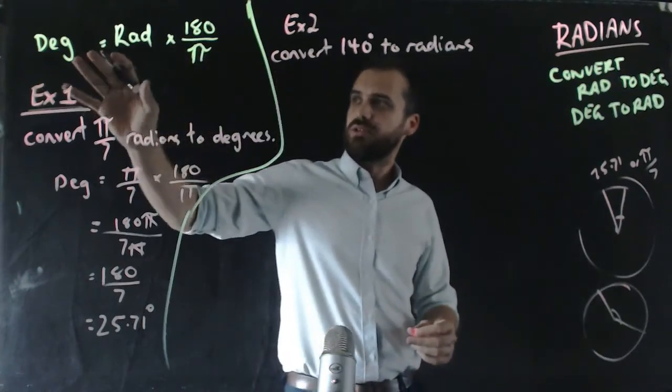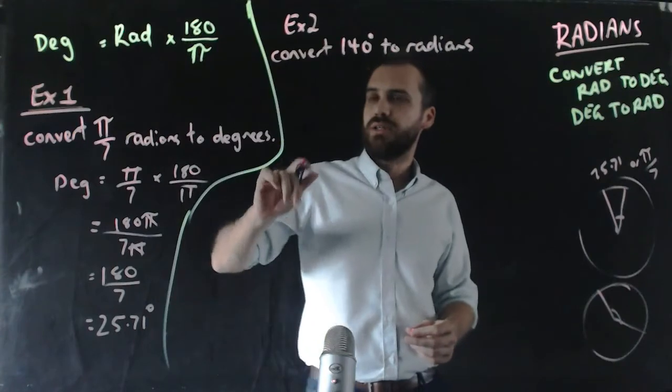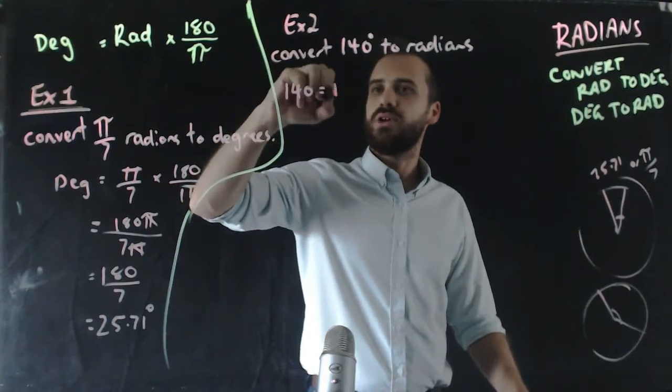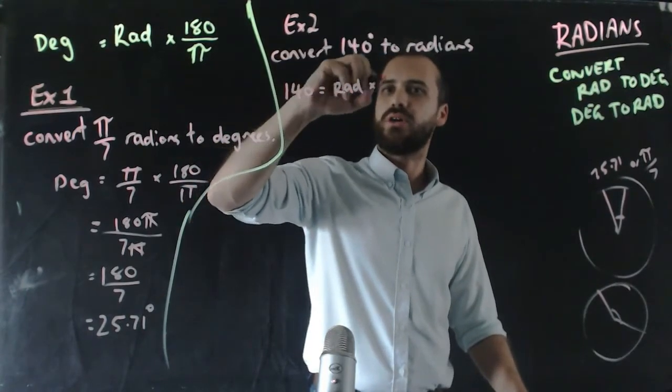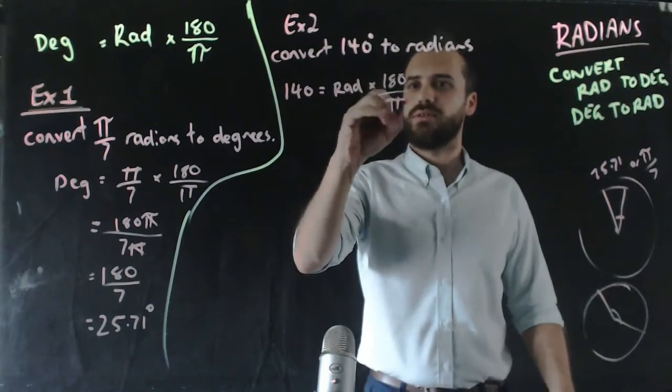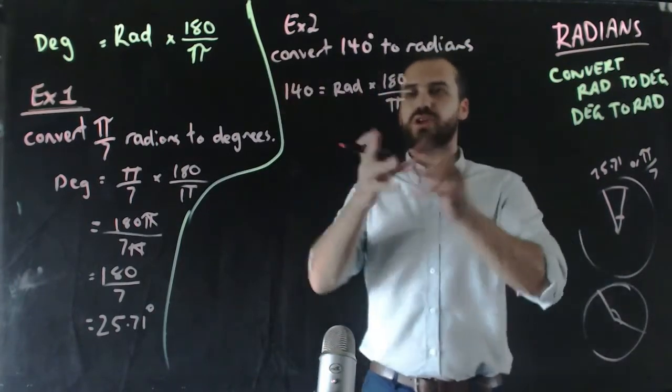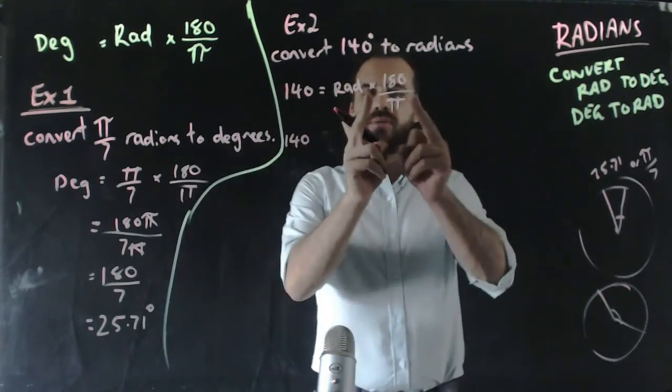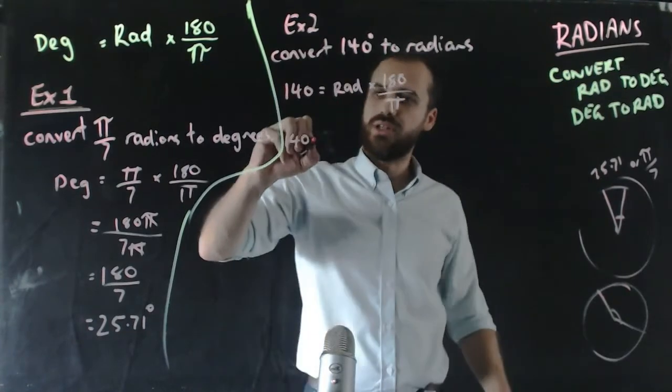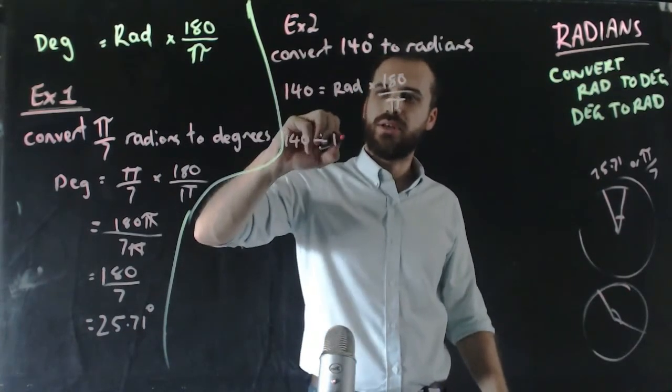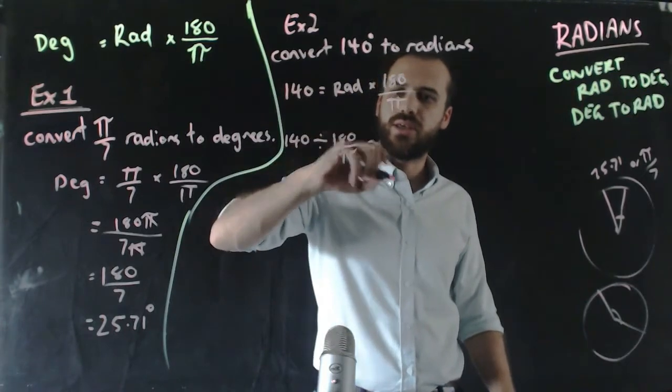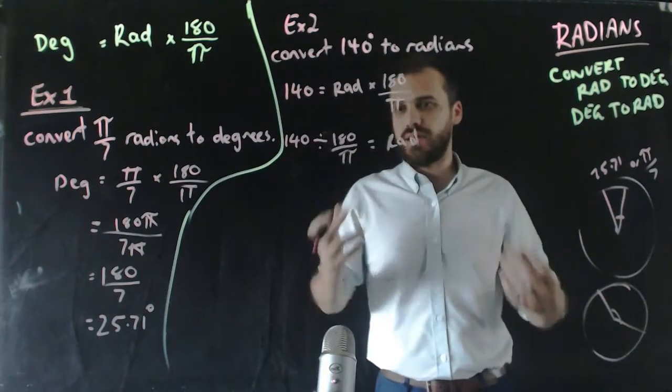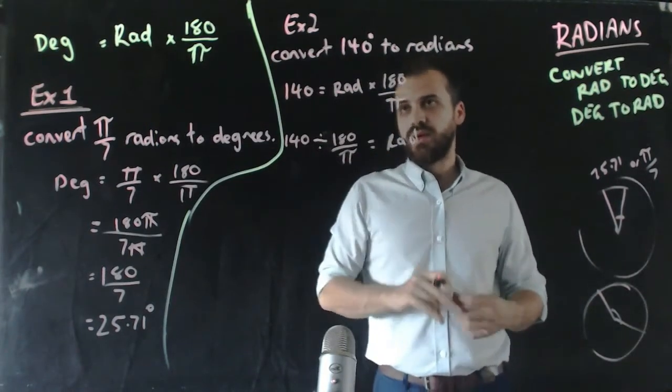We can use this formula: degrees equals radians times 180 over π. If I use that formula, it's going to be 140 equals radians times 180 over π. I can do some rearranging here. It's multiply on this side, so if I move it to the other side, 140 divided by 180/π equals whatever the radian measure is. You can type that into your calculator and get an answer.